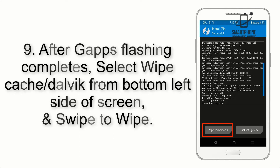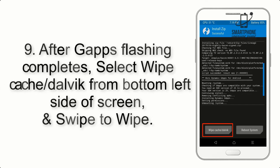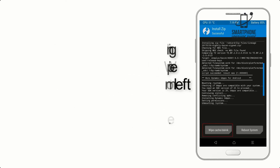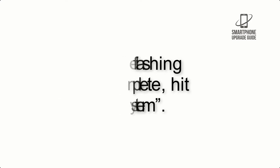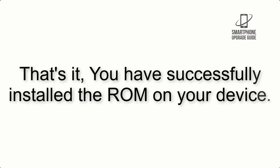Step 9: After GApps flashing completes, select Wipe Cache and Dalvik from the bottom left side of the screen and swipe to wipe. Step 10: When the flashing process is complete, hit Reboot System. That's it — you have successfully installed the ROM on your device.